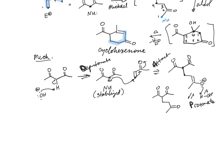Now look at all the alpha-carbons we have. We have the ones on the end, the middle one, and others. It's possible to deprotonate in all of those positions. But when I deprotonate at this position, then I end up with an enolate that can undergo an intramolecular addition, and that's why that's going to move us in the forward direction — because this enolate is six atoms away from our carbonyl.